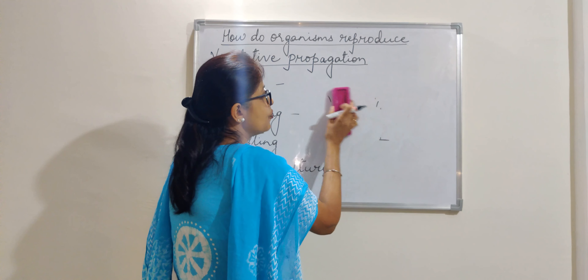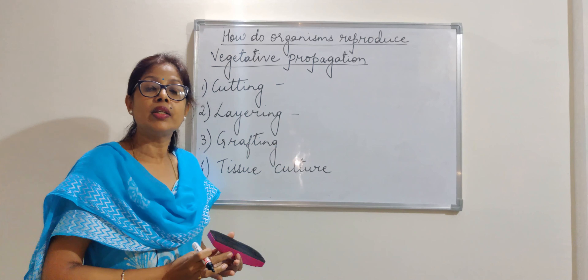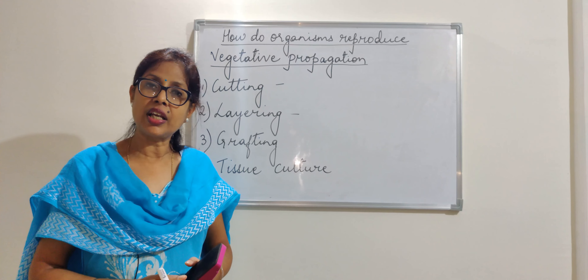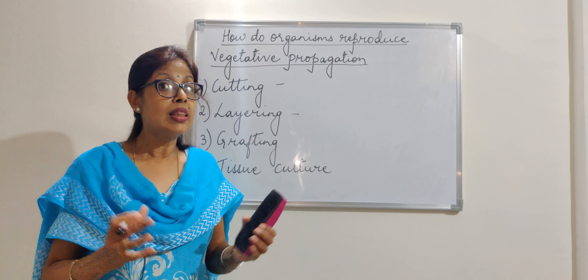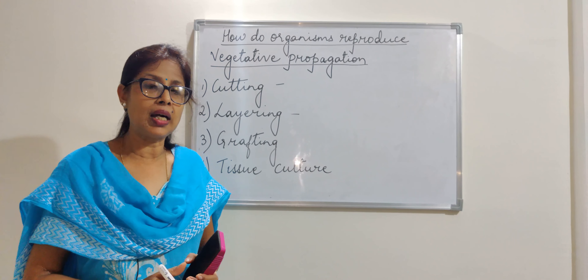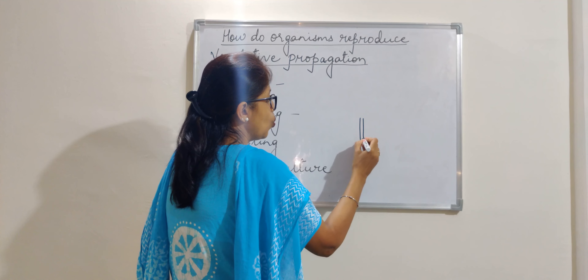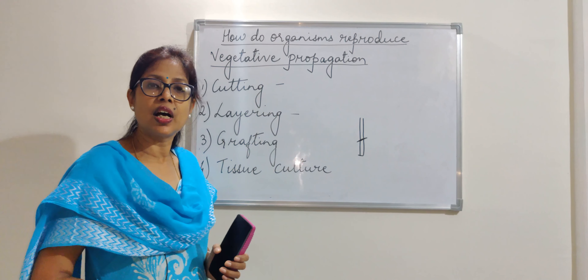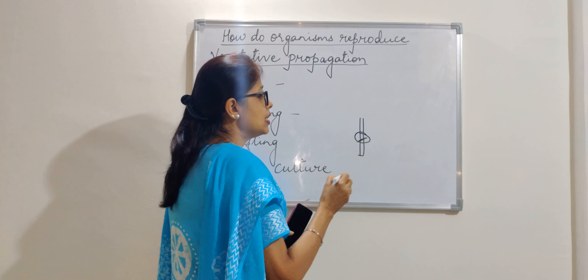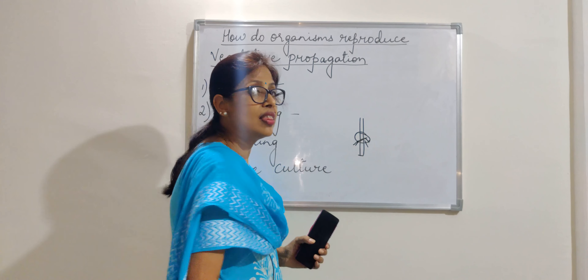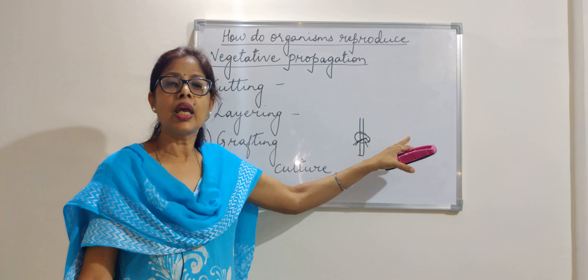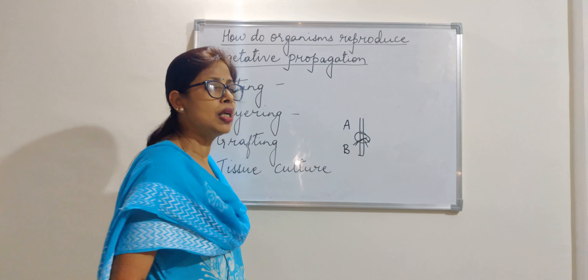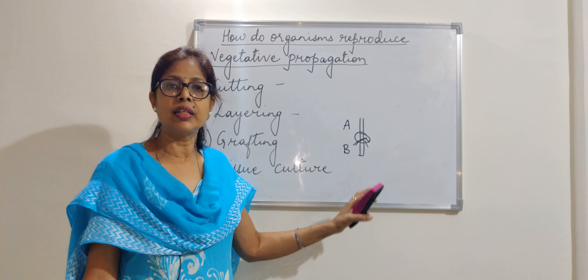Next we come to grafting. Grafting is when two varieties of plants are combined to get the best of both in one plant. Two plants are grown one above the other — the stem of one is planted on the stem of another and tied with a cloth until the roots develop, and then they grow into a new plant. One part is called the scion and the other is called the stalk.